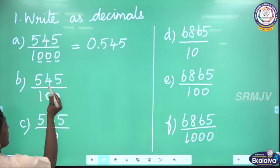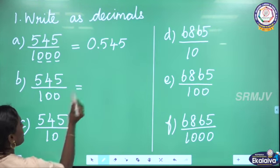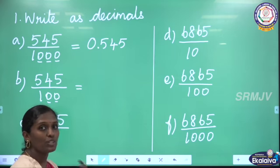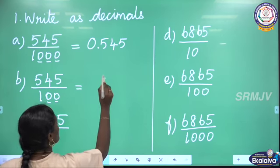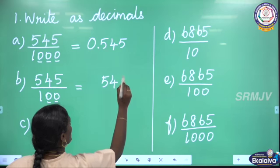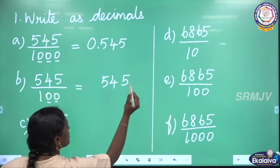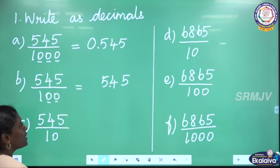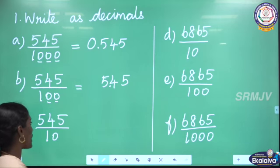The next one: 545 by 100. Here 2 zeros are there in the denominator, so we need 2 decimal places in the answer. First I am going to write the number as it is: 545. We need 2 decimal places, so from the last before 2 digits we have to keep the decimal point. So the answer is 5.45.